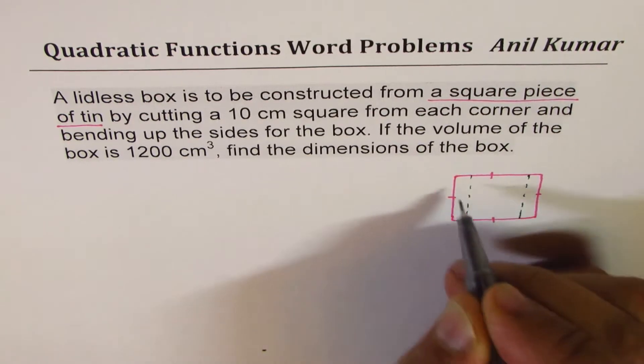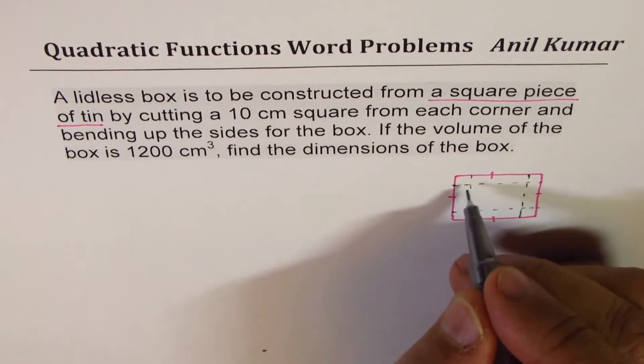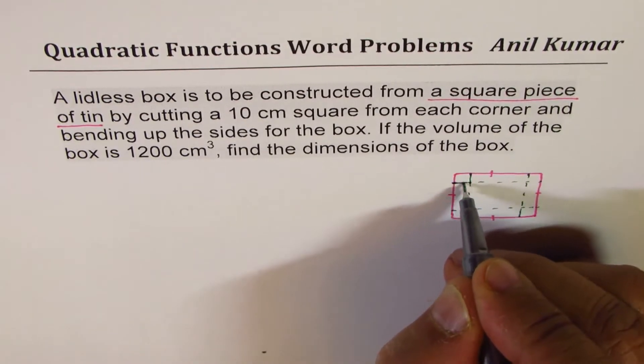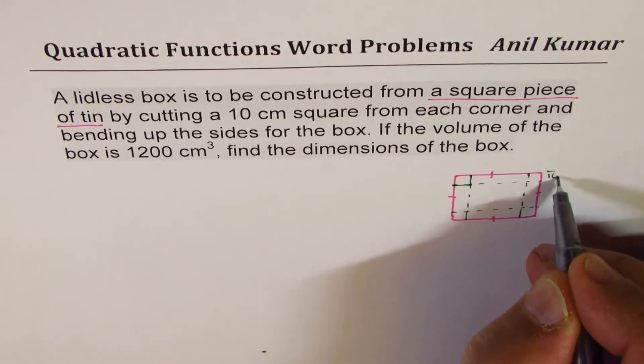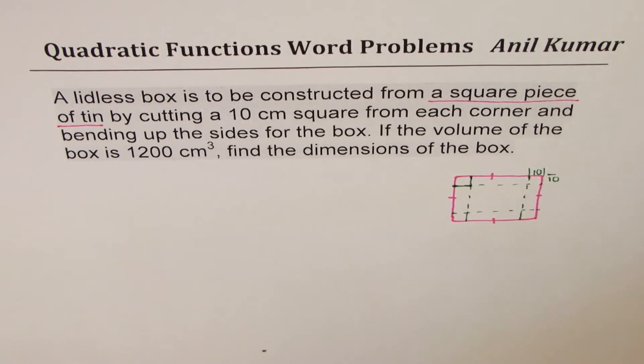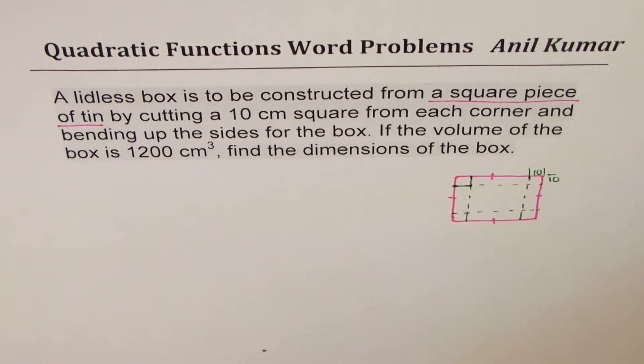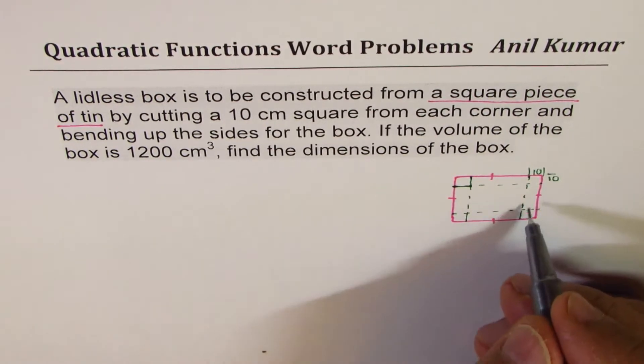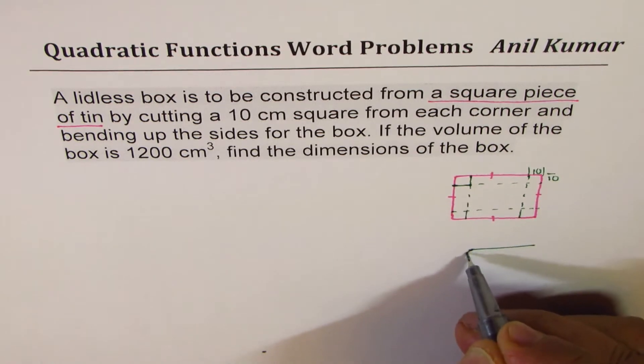So this is the square 10 centimeter by 10 centimeter, so this dimension is 10. Now when you make a box, how is it going to look like? So it may look like this through this green part. So whenever you're making a 3D figure it's a good idea to use x and y at an angle 30 degrees.